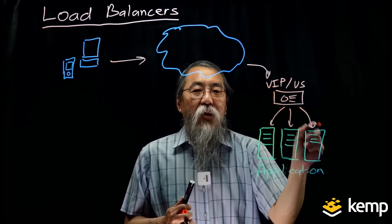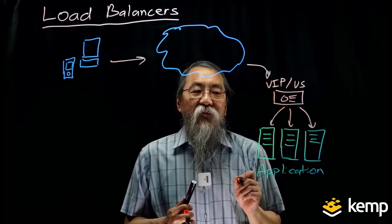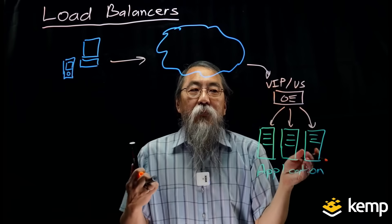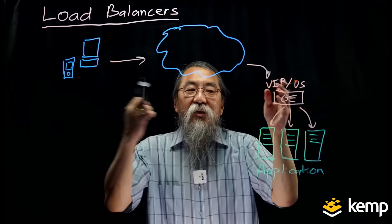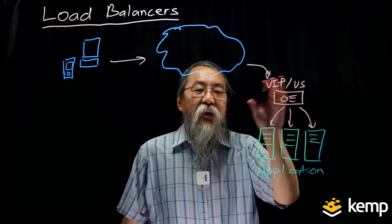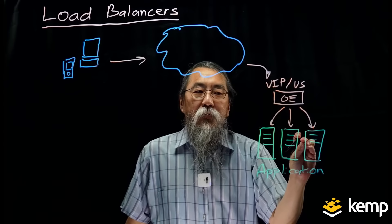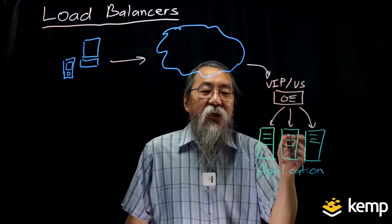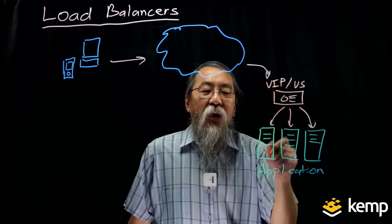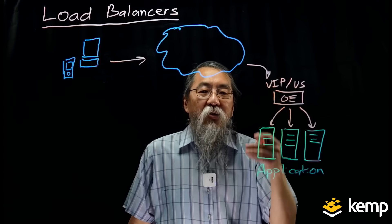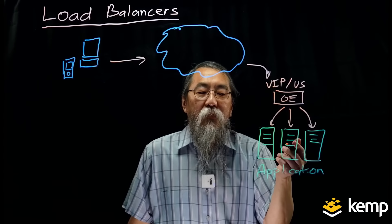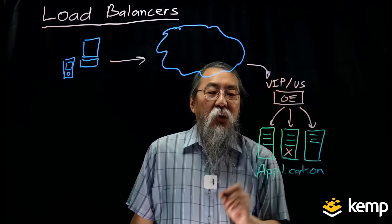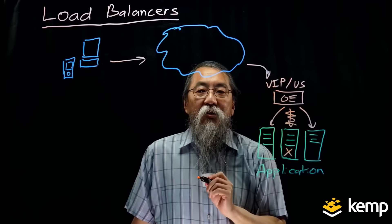The load balancer distributes traffic across a pool of application servers based on health, status, and availability. It knows about all the connections going through, so it knows how many connections are going to each application server. It performs what we call health checks, which monitor the application and the server to make sure they are available and responding appropriately. If an application server goes down, the load balancer knows to stop sending connections to that server.